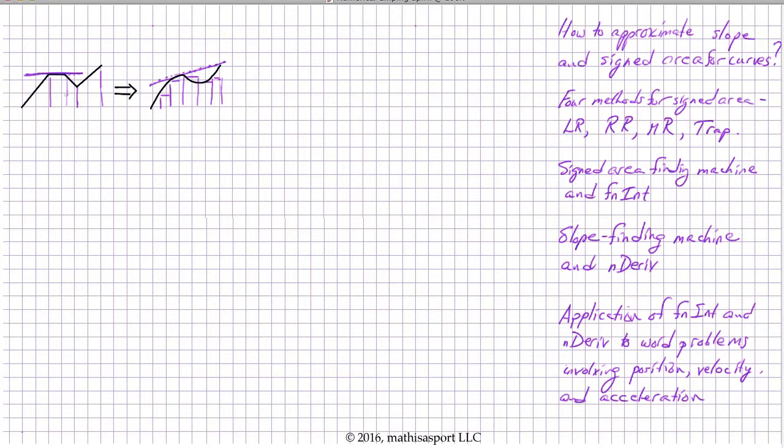But in the real world, the graphs of position, velocity, and acceleration are almost never straight lines. They're almost invariably complex and curved lines.